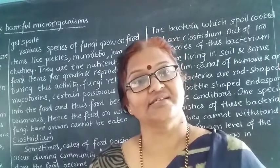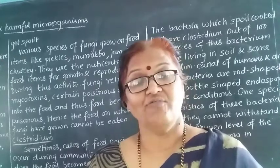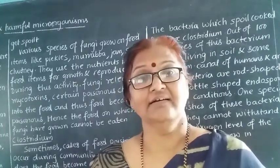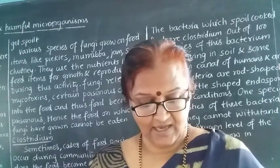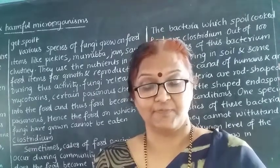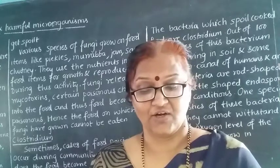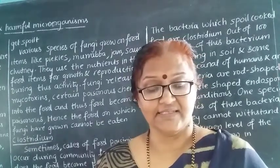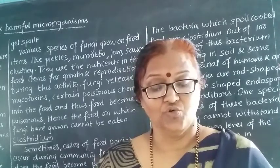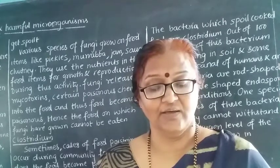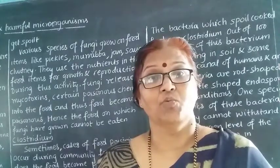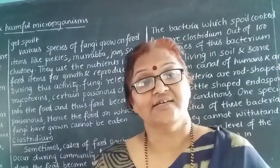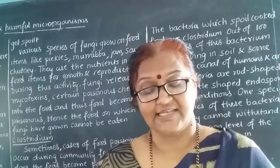Viruses are smaller than bacteria and can grow and reproduce only in living cells. Let us see how harmful they are. The first disease in the table is AIDS. The pathogen is virus. The mode of infection is through blood and semen of the infected person and milk of a mother suffering from AIDS. Prevention includes avoiding sexual contact and avoiding reuse of needles, syringes, or injections.